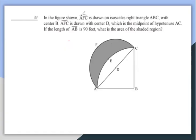We have arc AFC. This is our arc AFC, and we have an isosceles right triangle, which is good.